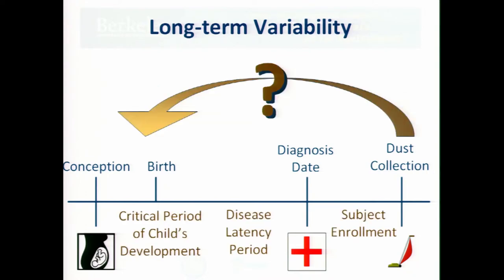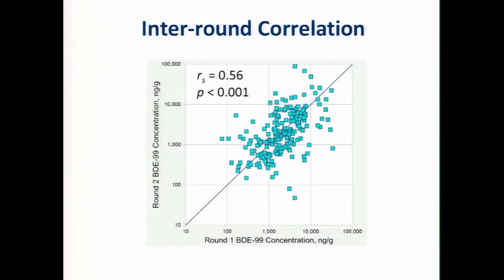So the question is really, can you make that leap? Is it reasonable to assume that what's measured five years after birth is really relevant to the exposures that cause leukemia? The way that we try to evaluate that question is by taking repeat samples of dust from the same households and then comparing the concentrations of chemicals that we measured in dust from the first sampling round to the concentrations of chemicals that we measured in dust from the second sampling round. These sampling rounds are separated by anywhere from three to eight years.